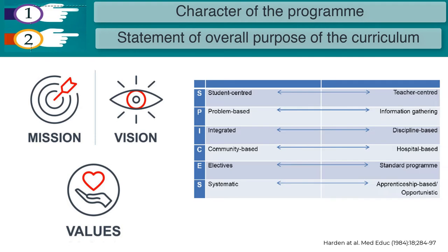As a result of this, the SPICES model has been proposed, which shows the options from a traditional curriculum to a curriculum with greater innovation. Here we have several points of reference: from a more teacher-centered curriculum to a more student-centered one; from a curriculum more concerned with the collection and transfer of information to one based on problems; one based on disciplines or integrated; one focused more on hospital care or community care; a uniform or rigid curriculum, or one with a greater choice of electives; and finally, an opportunistic apprentice-model-based curriculum, or a systematized one where everyone goes through the same experiences. We do not always have to be at one or the other end of these options — this will depend on the context in which the curriculum is designed.